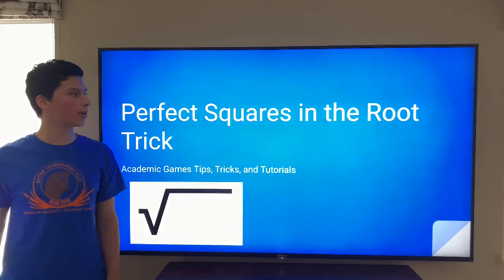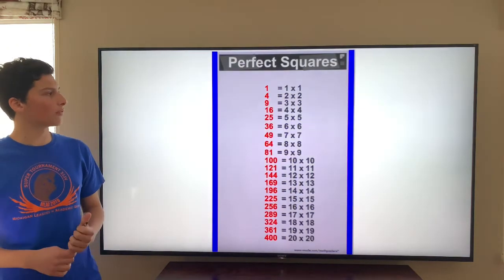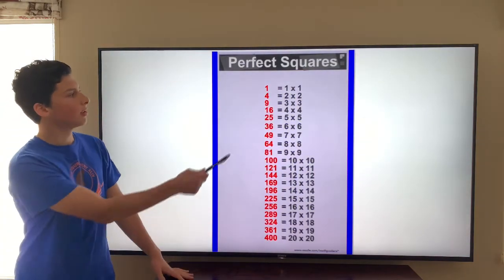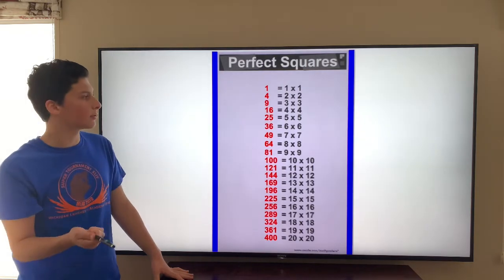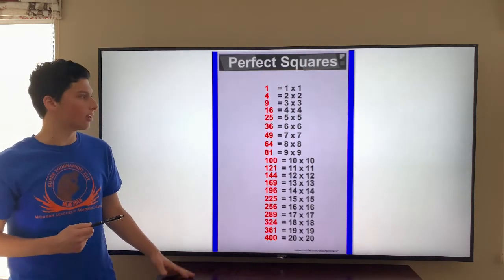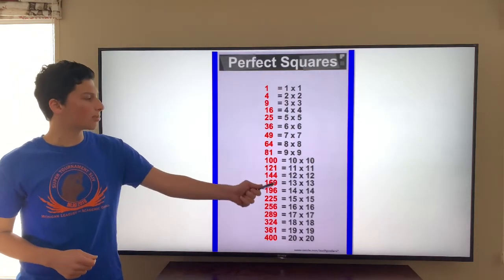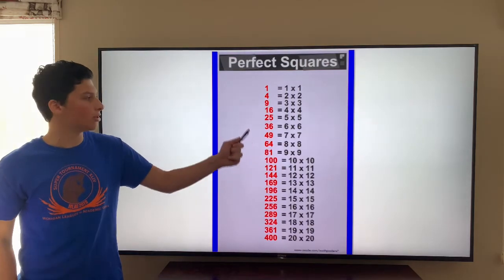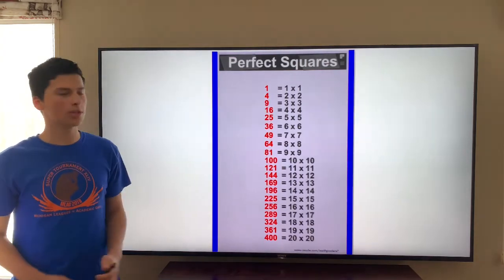Before we begin, it's imperative that you know your perfect squares. Like 1 times 1 is 1, 2 times 2 is 4, 3 times 3 is 9, etc. The same number being multiplied, getting another number, you need to know these numbers. So just make sure you know them.